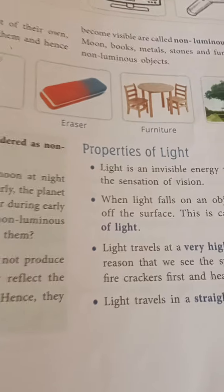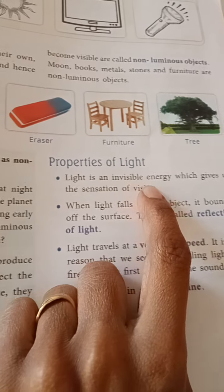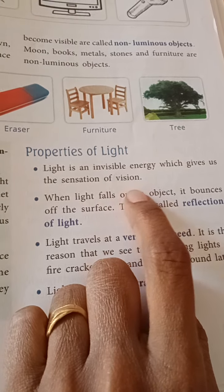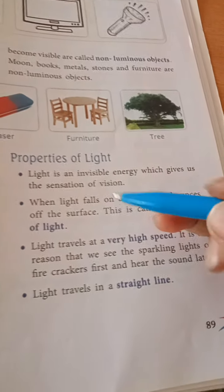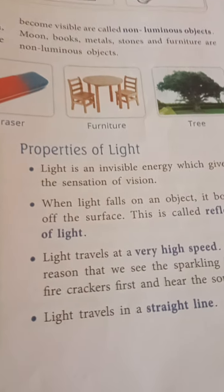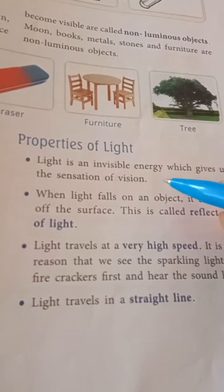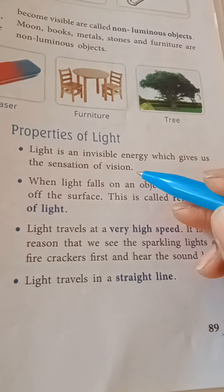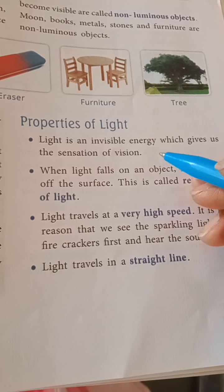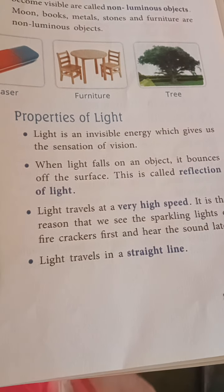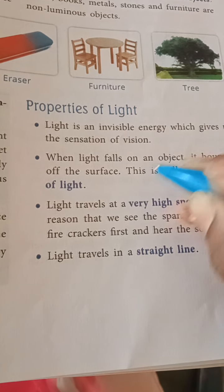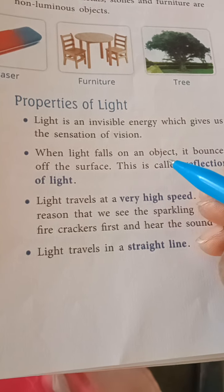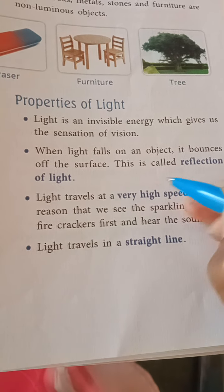What are the properties of light? Light is an invisible energy which gives us the sensation of vision — vision means to see. That is the first property. The second property: when light falls on an object, it bounces off the surface, and this is called reflection of light.